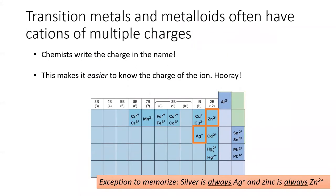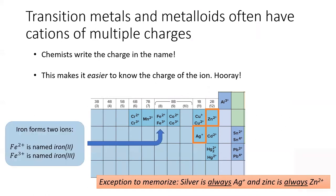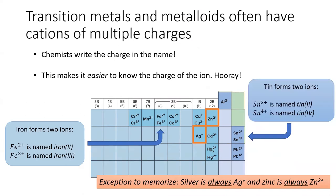Transition metals and metalloids are not as predictable as the main group elements — they can form ions of different charges. To make things easier, chemists write the charge in the name using Roman numerals. For example, iron forms two ions: iron 2+ is called iron(II), and iron 3+ is named iron(III). Similarly, tin 2+ is named tin(II) and tin 4+ is named tin(IV).